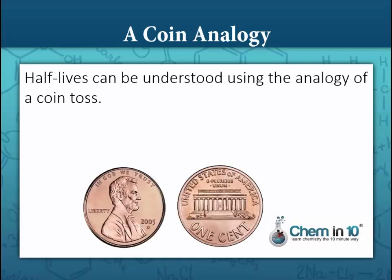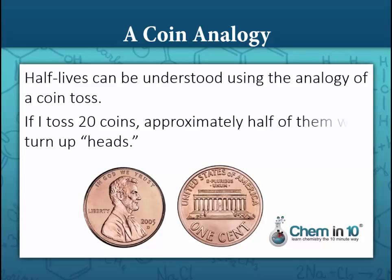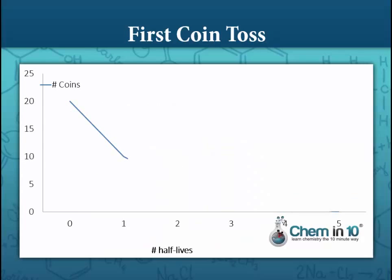Let's use an analogy of a coin toss to illustrate the half-life of a radioactive isotope. If I toss 20 coins, approximately half of them will turn up heads — let's say I get 10 heads. Here I have a graph of number of coins as a function of number of half-lives. At half-life 0, I have 20 coins. After the first coin toss, I have 10 heads, and I remove all the tails from the pile. So now at one half-life, I have 10 coins remaining — half the number of coins.